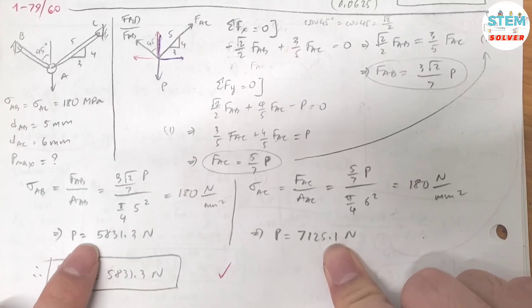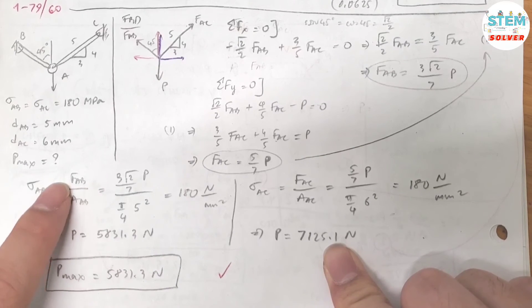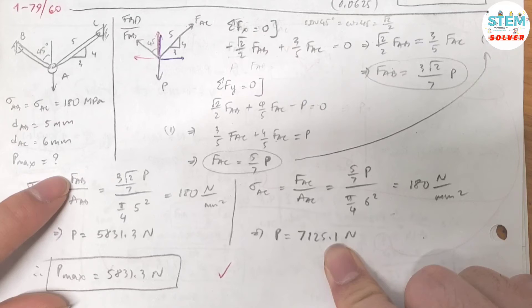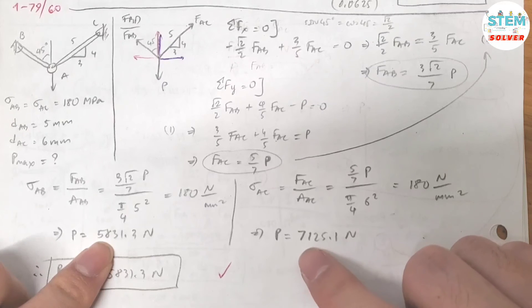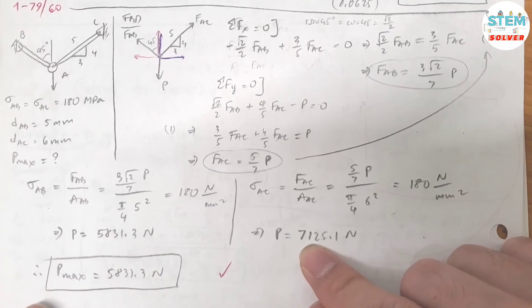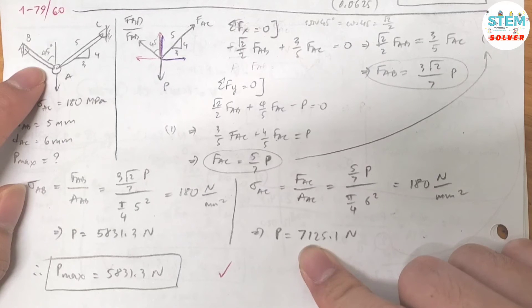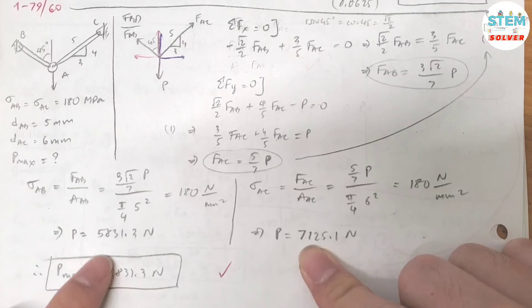Now let's compare. For FAB, you have a force of 5800 N. And for FAC, you have 7000 N. So the maximum force P that can be applied to this system is equal to the minimum force P which is 5831.3 N.